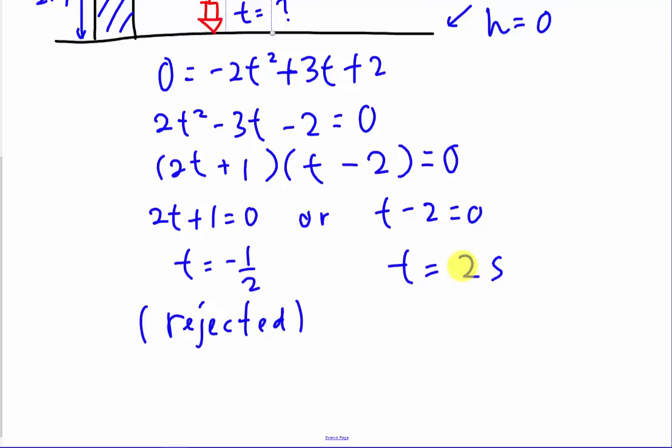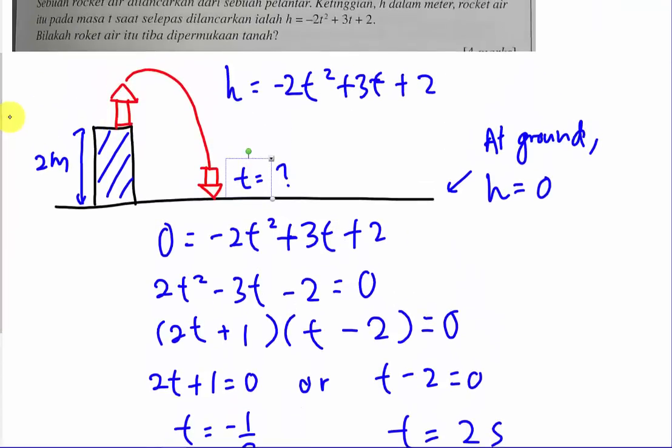So you just need to understand time is impossible to get negative and so therefore you only have one answer which is t equals to 2. So if you got t equals to 2, what is the meaning of that? Meaning is that when you launch the rocket, they just take 2 seconds, the rocket actually will hit the ground. So therefore the final answer will be 2 seconds. Alright, it's not really hard.